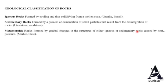In summary: igneous rocks are formed by cooling and solidifying from a molten state — examples are granite and basalt. Sedimentary rocks are formed by cementation of small particles resulting from the disintegration of rocks — examples are limestone and sandstone. Metamorphic rocks are formed by gradual changes in igneous or sedimentary rocks caused by heat and pressure — examples are marble and slate. Slate is metamorphosed clay; marble is metamorphosed limestone but is harder than limestone.